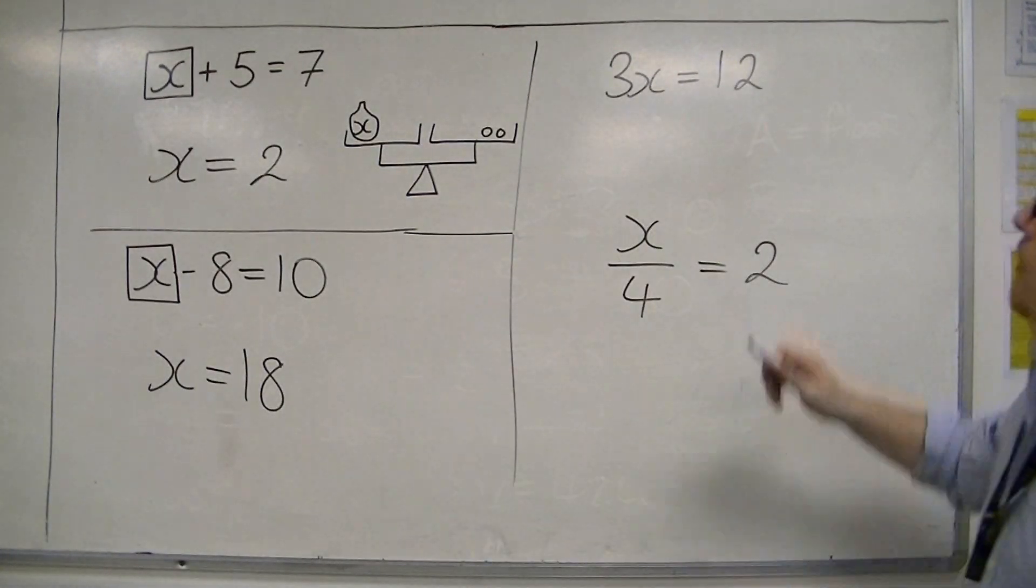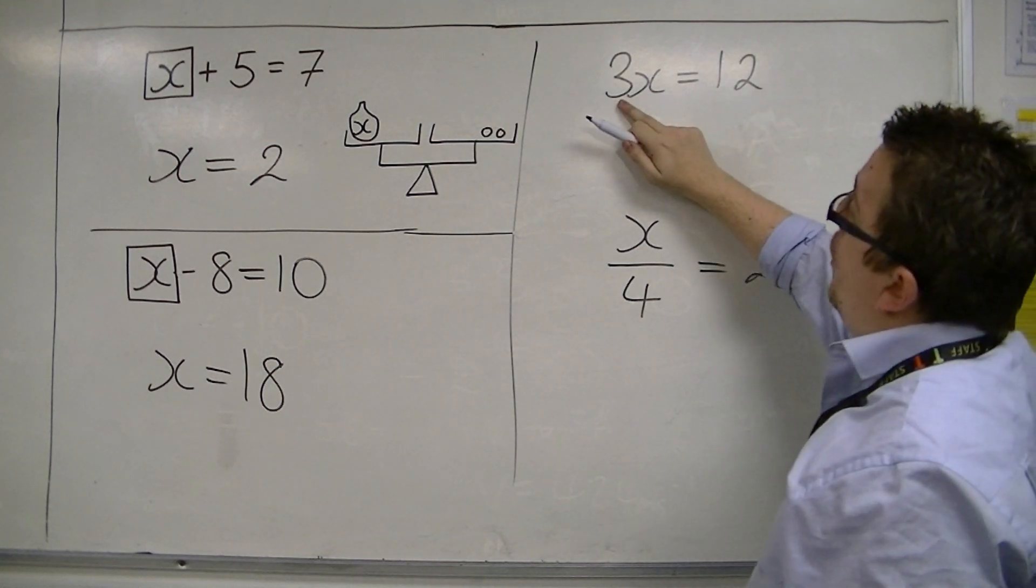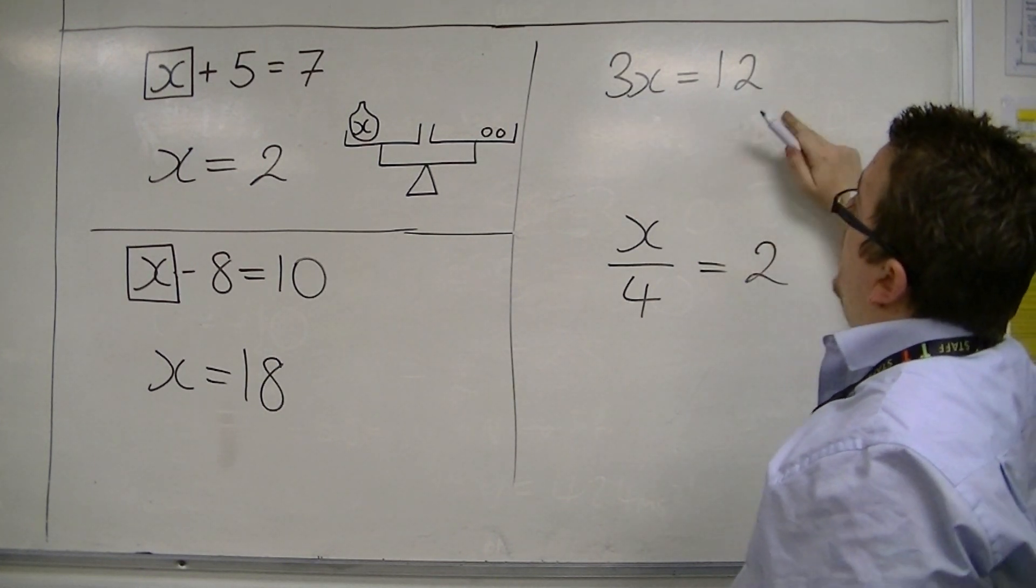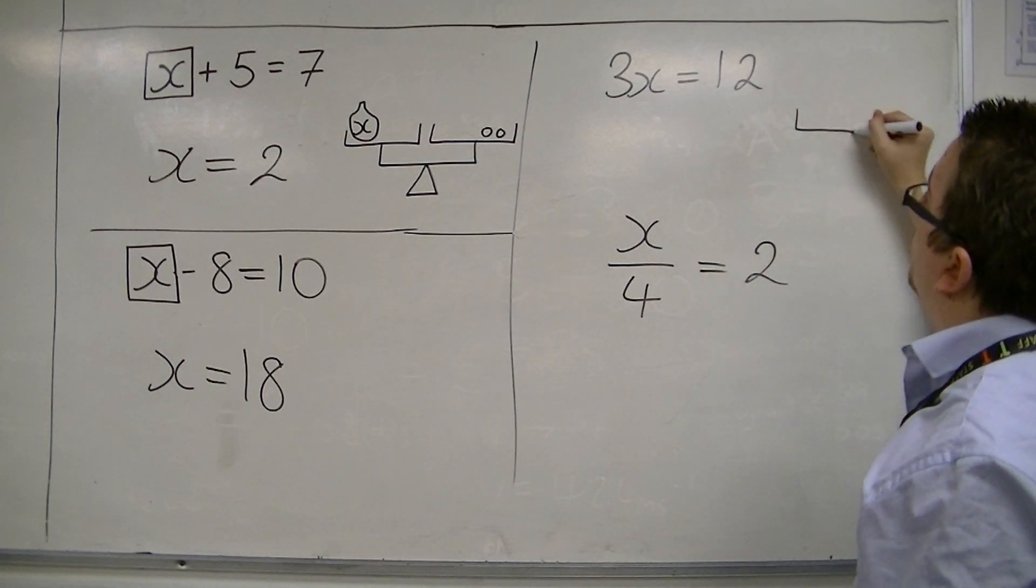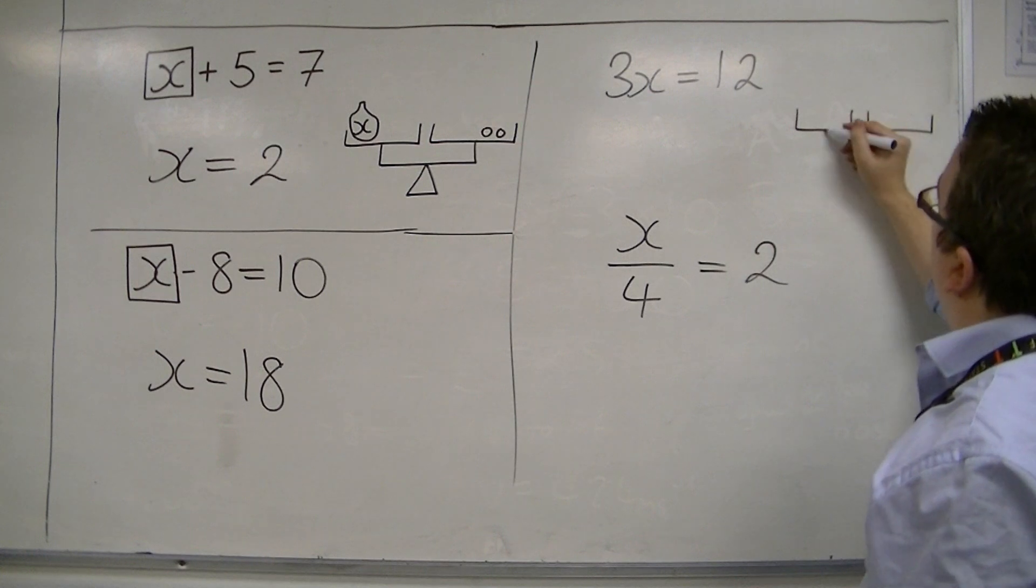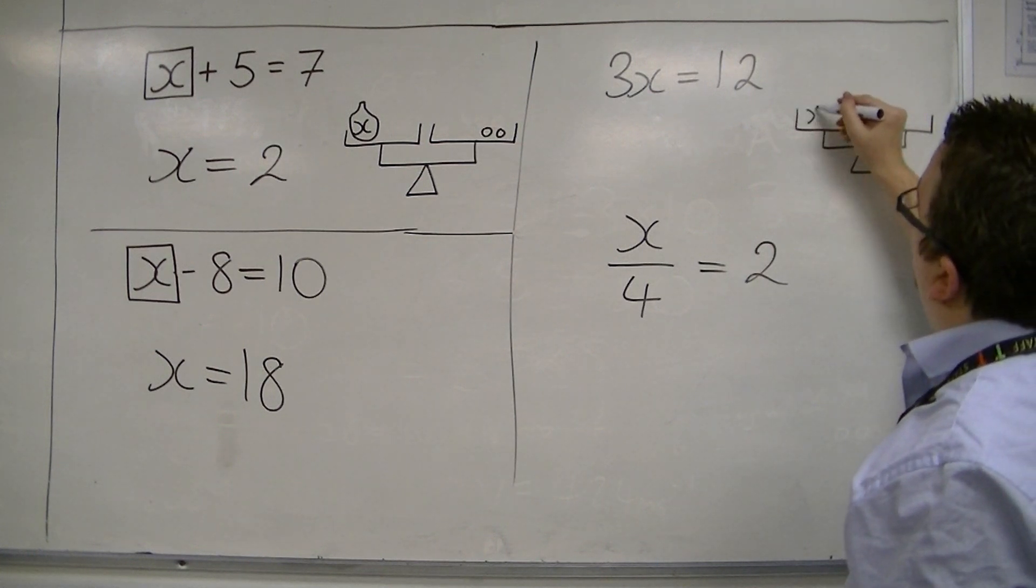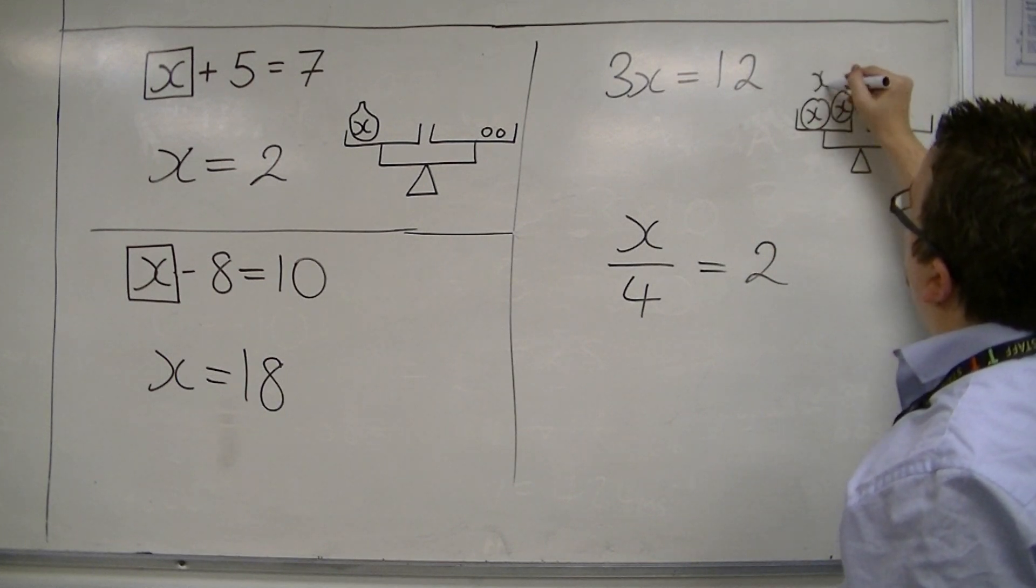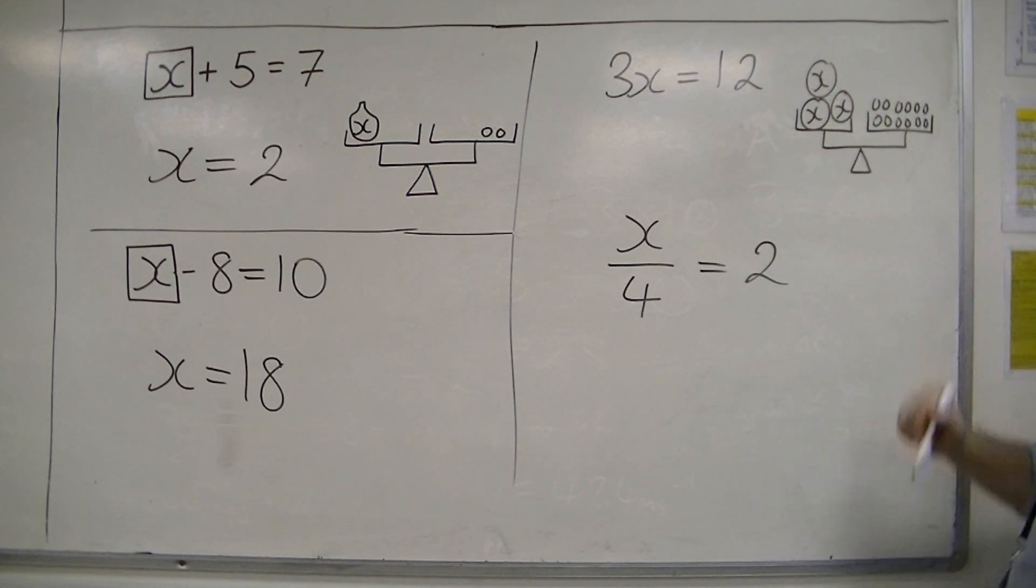Over here, you've got three x equals twelve. So, three lots of something must be equal to twelve. Now, once again, you could see this as scales, if you like. So, you've got these three bags of x on this side, and that's equal to twelve little bits on the right-hand side.